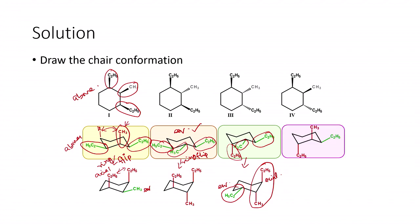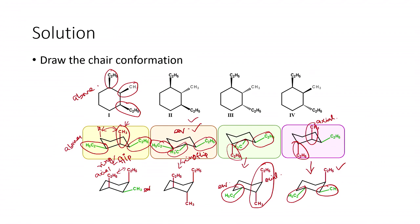For compound four, two substituents are already in the axial position, which is quite unstable. A ring flip leads to two equatorial substituents, which is better. Among all four compounds, compound two is the only one where all substituents are in the equatorial orientation, making it the most stable. All other compounds have 1,3-diaxial interactions, giving high-energy conformers. Therefore, compound two has the most stable conformation.